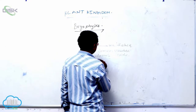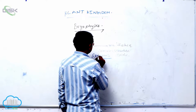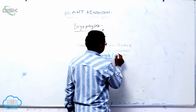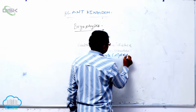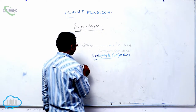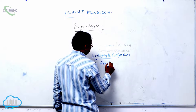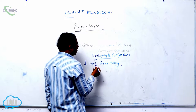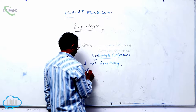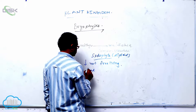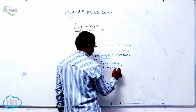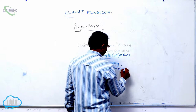The sporophyte is multicellular — it is a complex structure. It is a diploid structure. In Bryophyta, the sporophyte is not free-living; it mainly depends on the gametophyte for food.